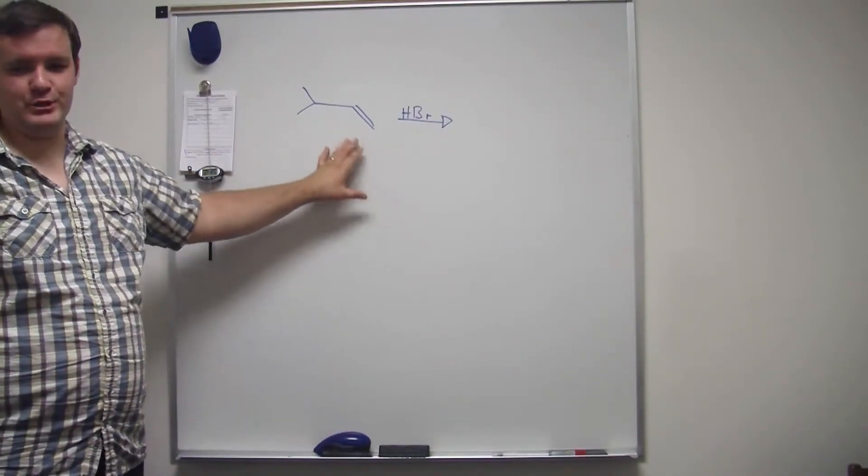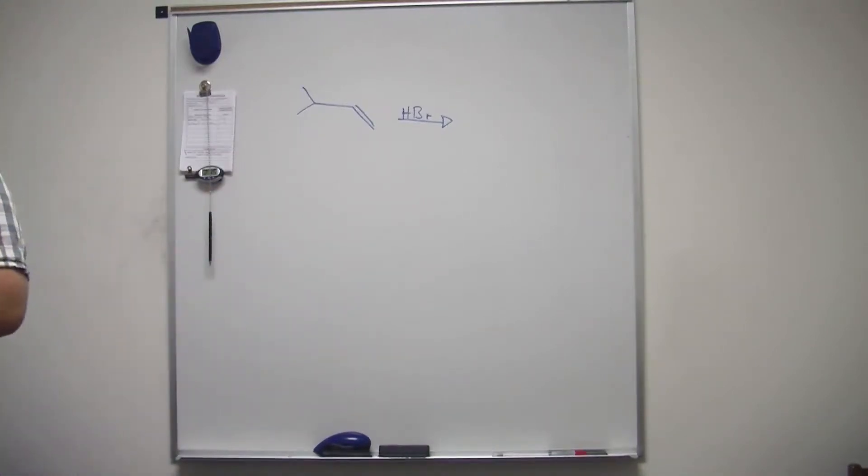Figure out what the structure of that product will be. The double bond number eight. Okay. So Markovnikov says the hydrogen will go on to the least substituted end. So hydrogen will go on to the end. But the Br on C2. C1.